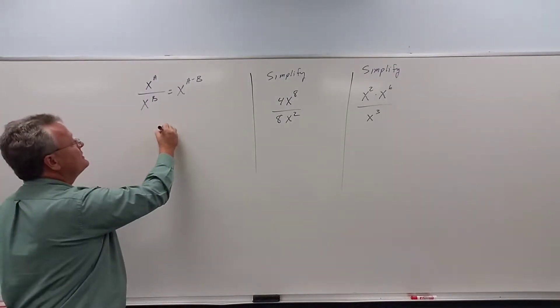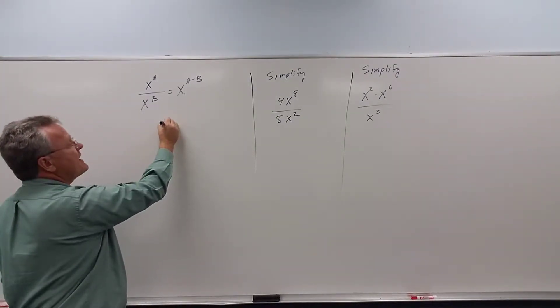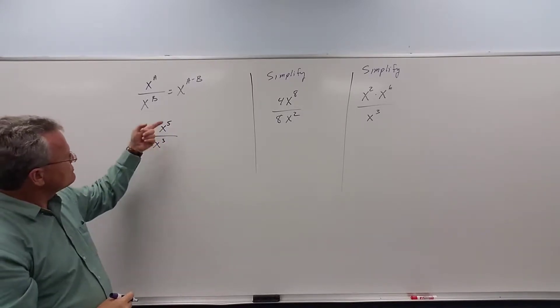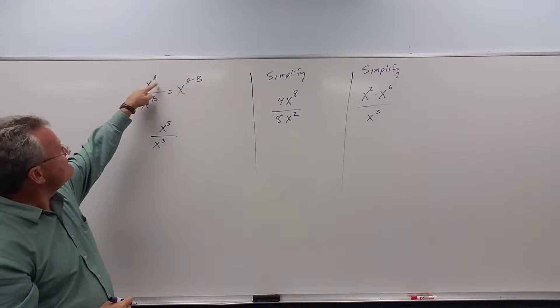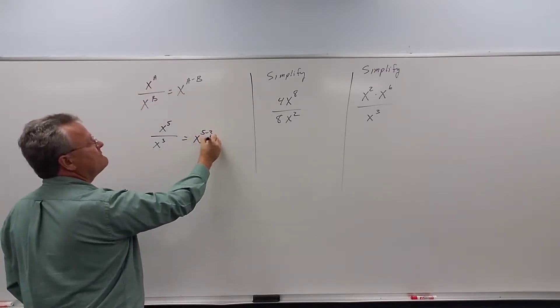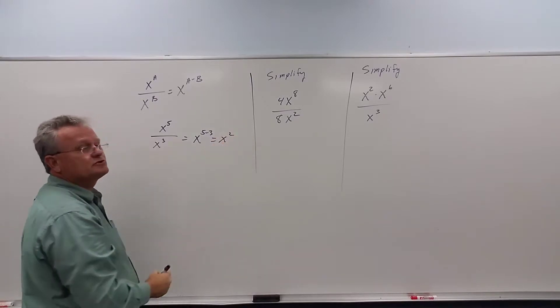Well, let's consider x to the 5 over x to the 3. If we just apply the rule, we get 5 minus 3, and 5 minus 3 gives us x squared.